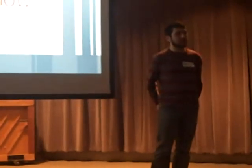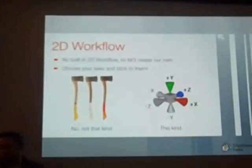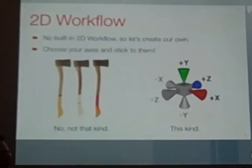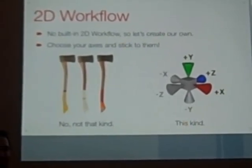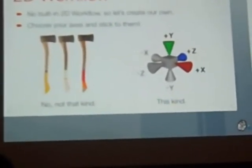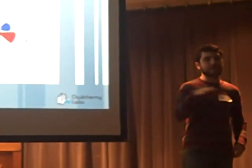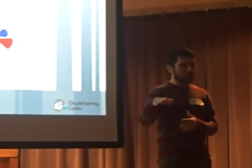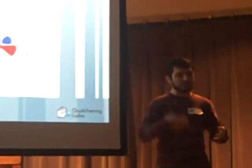We're trying to make a 2D game in a 3D engine, which seems a bit bizarre. With a 3D engine, you're not going to get a 2D workflow handed to you, so we're going to create our own. One of the most important decisions you have to make is which direction your axes go. It doesn't matter which way they go — what matters is that once you've made that decision, you stick to it throughout all your scene setups in Unity, because if you keep changing it around, it's going to cause a lot of problems.